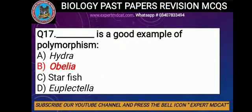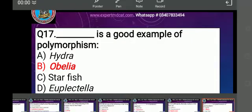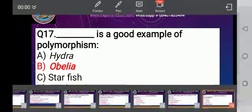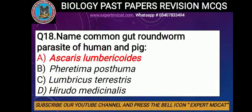Question number 17: Which organism is a good example of polymorphism? Polymorphism is a characteristic feature of Cnidaria. Question number 18: Name the common gut roundworm parasite of human and pig.